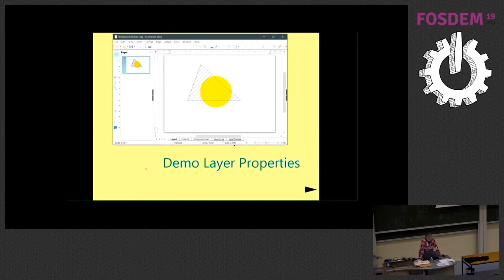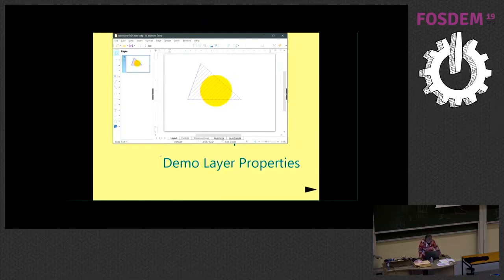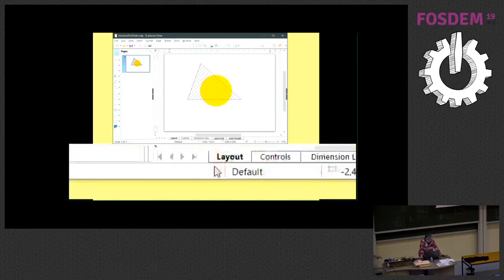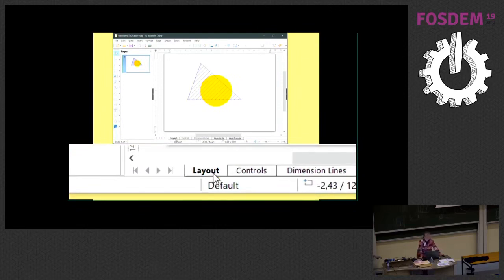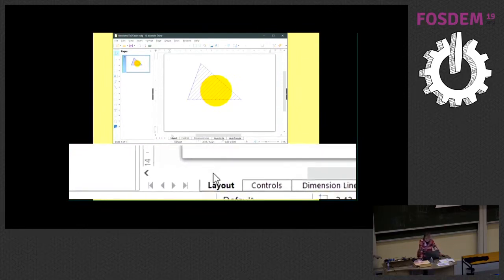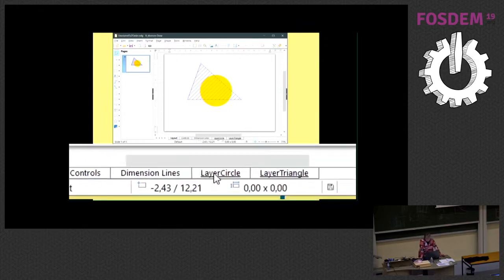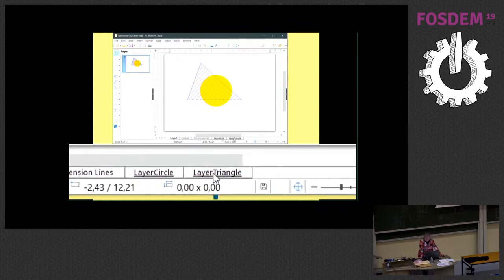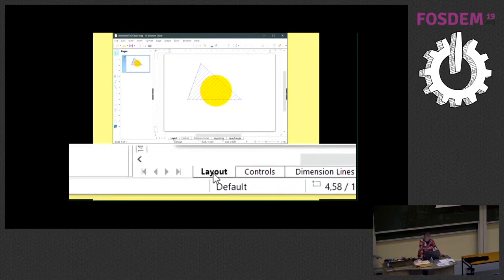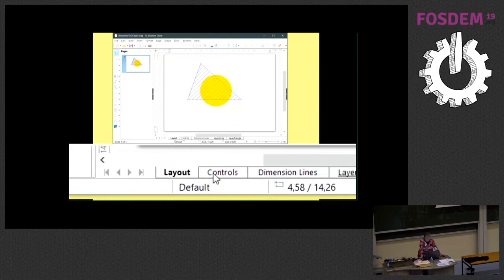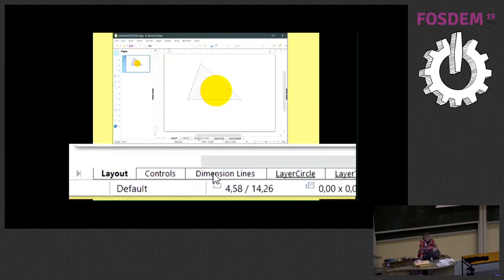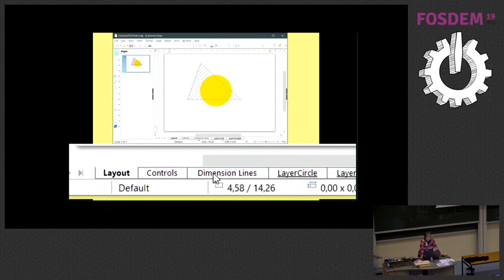The layers are provided here with a layer tab where the layers which exist are listed. Here I have layers, a layer circle I have defined myself and layer triangle. This is LibreOffice. There are the layers: layout, controls, and dimension lines. They are default layers and are always present.